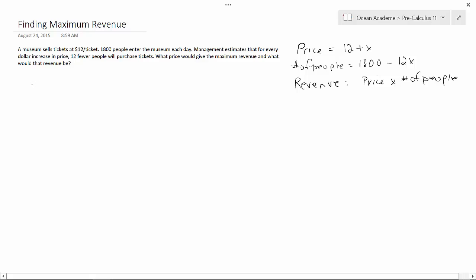So let's just put that together. So that's going to be 12 plus X multiplied by 1,800 minus 12X. So if we expand this out, we get 21,600 minus 144X plus 1,800X minus 12X squared. Now, let's rearrange this so it looks a little bit more familiar. So minus 12X squared.